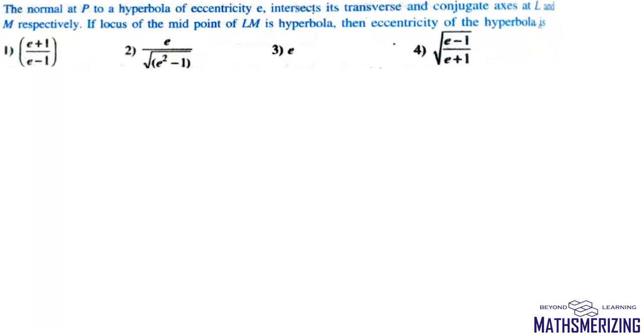The question is: the normal at point P to a hyperbola of eccentricity e intersects its transverse and conjugate axis at L and M. If the locus of the midpoint of LM is a hyperbola, then find the eccentricity of the hyperbola.